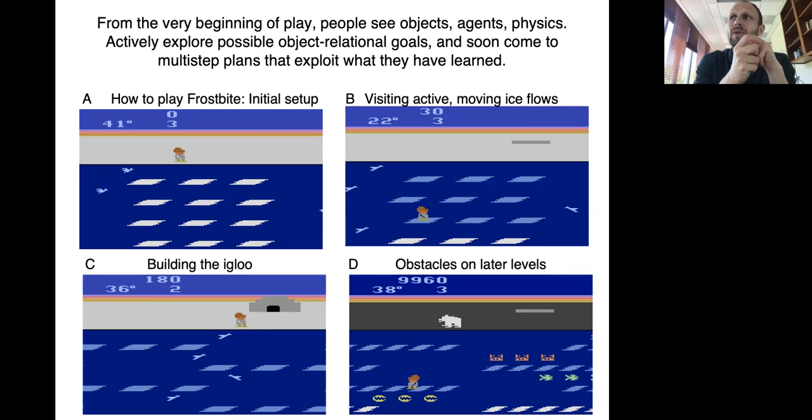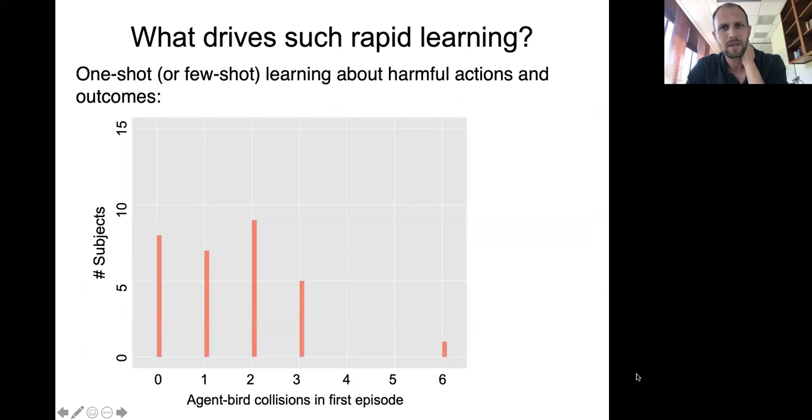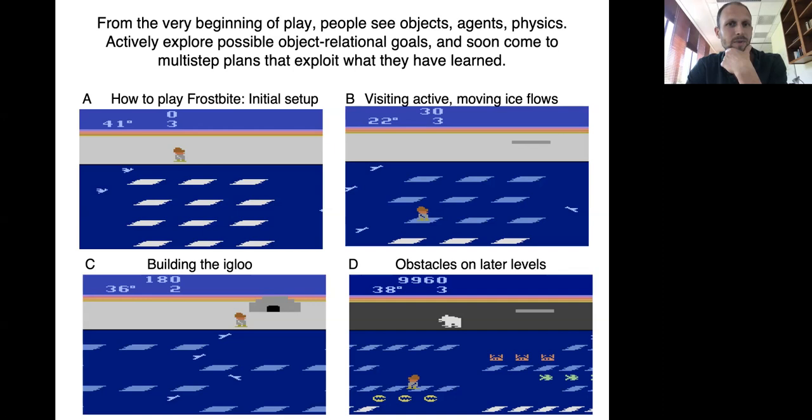So what does this mean? What are humans actually doing that's ostensibly different? The argument I want to make is that from the very beginning of play, people see objects, agents, and physics. They actively explore object-relational goals, and then eventually they come up with multi-step plans that exploit what they have learned. So here in playing fast, they first have to figure out what is there on the screen, and then exploring what happens when you interact with different objects. You eventually figure out that you're building an igloo, you later have obstacles on different levels, like there's a polar bear and so on.